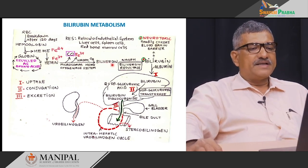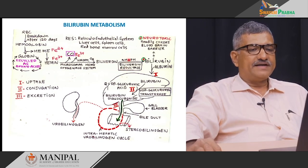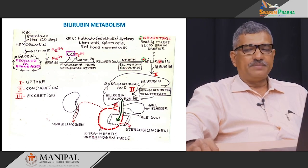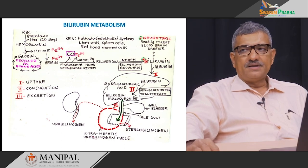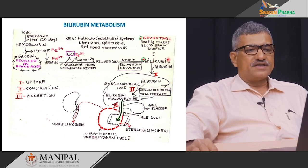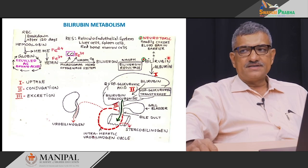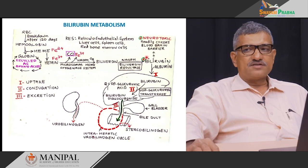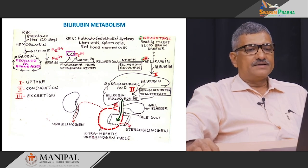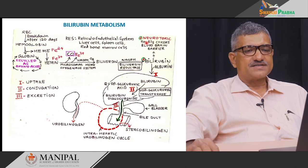Biliverdin is then converted to bilirubin by the action of the enzyme bilirubin reductase in the presence of NADPH. This bilirubin is considered to be toxic — it is neurotoxic — since it is soluble in fat but insoluble in water. Because of its solubility in fat, it readily crosses the blood-brain barrier and therefore is considered to be neurotoxic.